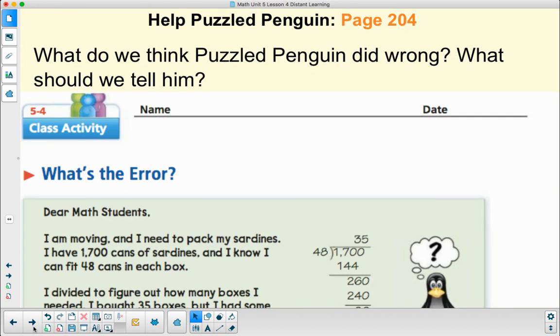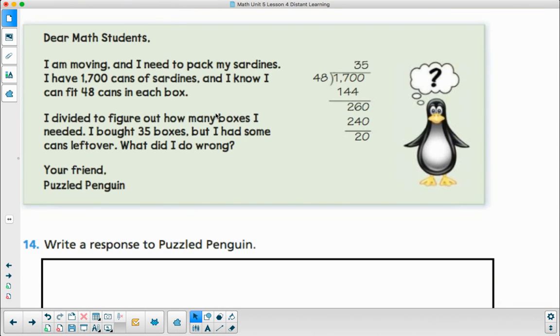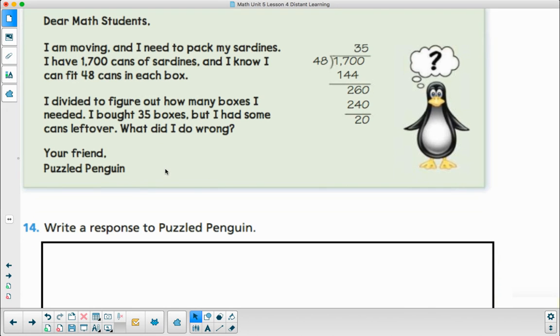Another page done. What do we think Puzzle Penguin did wrong? What should we tell him? We have our good friend Puzzle Penguin. He says, dear math students, I am moving and I need to pack my sardines. I have 1,700 cans of sardines and I know I can fit 48 cans into each box. I divided to figure out how many boxes I needed. I bought 35 boxes but I had some cans left over. What did I do wrong? Your friend Puzzle Penguin. So think about what he did wrong and write it on down.